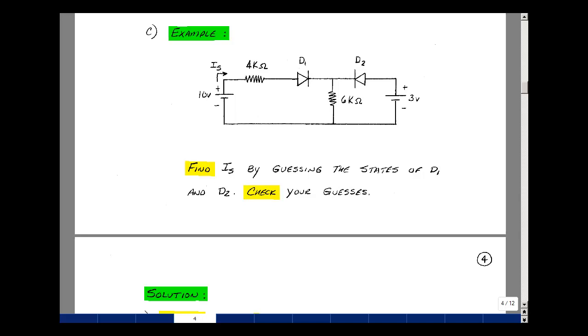This lesson deals with an example with ideal diodes. You can find these notes in the course e-book in Chapter 9, starting at the bottom of page 3. Given a circuit with two ideal diodes, where here is the anode of 1 and the cathode of 1, and the anode of 2 and the cathode of 2, could you find the current I sub s by guessing the states of the diodes, D1 and D2, and then check your guesses to make sure they're correct?